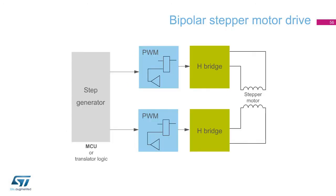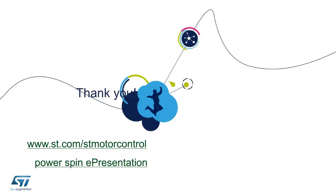In this session, we have discussed the basics of stepper motor operation and the typical drive configurations for commonly available stepper motors. This block diagram shows a typical stepper motor drive system: the three blocks needed to drive the stepper are the step time and phase generation, typically done in a microcontroller, the PWM current control, and the power bridge. Thank you for your attention. Please visit us at st.com to view the many motor control products and solutions available from ST. For more information, please refer to www.st.com/stmotorcontrol. You can also watch the PractiSpin e-presentation.